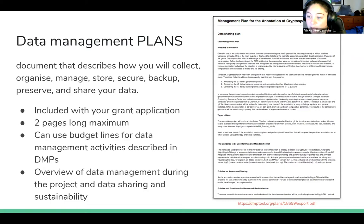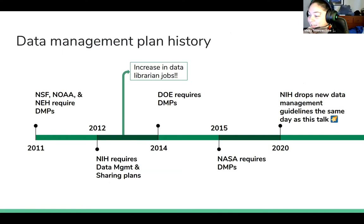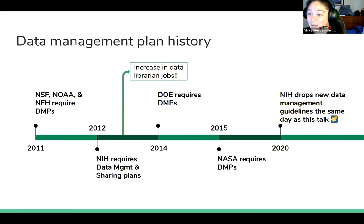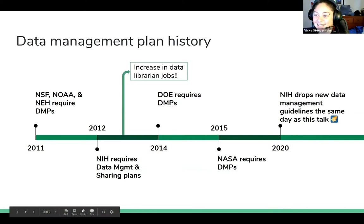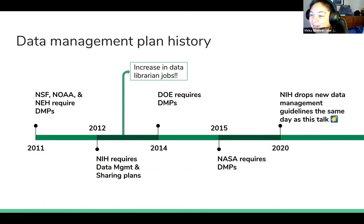Data management plans have been around for almost a decade now, which is really exciting. NSF, NOAA, and NEH required them beginning in 2011, and NIH followed very shortly after. We saw a big increase in data librarian jobs, which is really good for this talk, because I'm going to be pointing you to how you can find data librarians and library workers at your local institution to help you with these data management plans, because we're there and we're eager to help. As Lisa mentioned, NIH dropped new guidelines just in time for this talk, and we have some new guidelines around sharing that have been evolving over time.